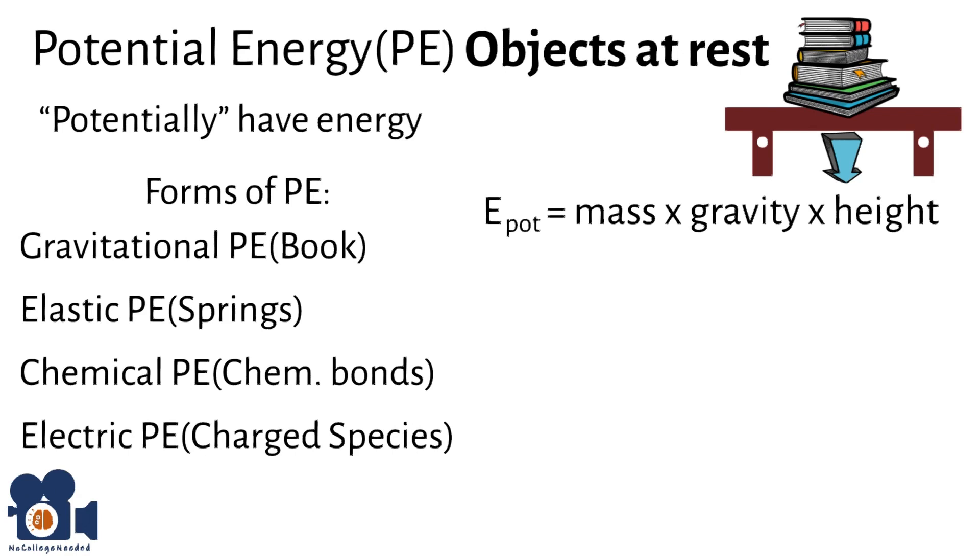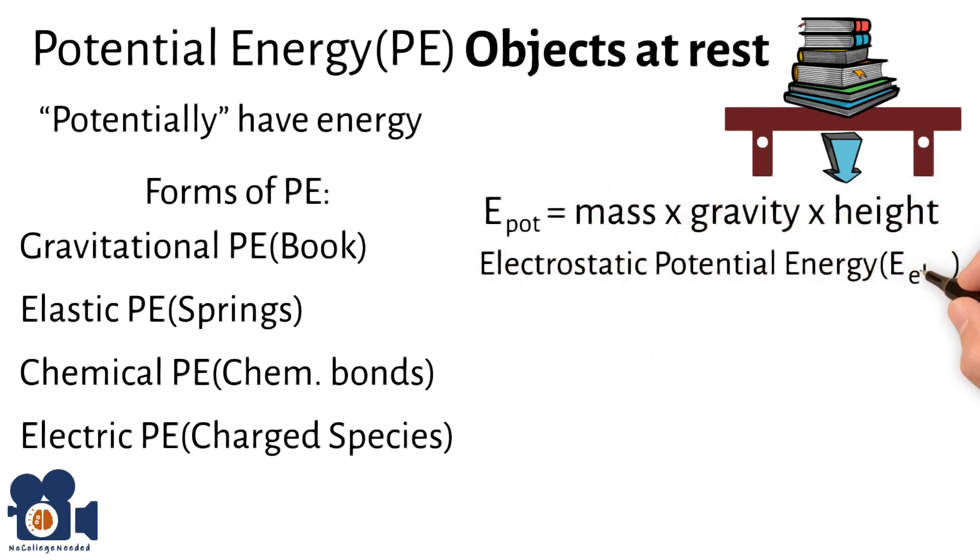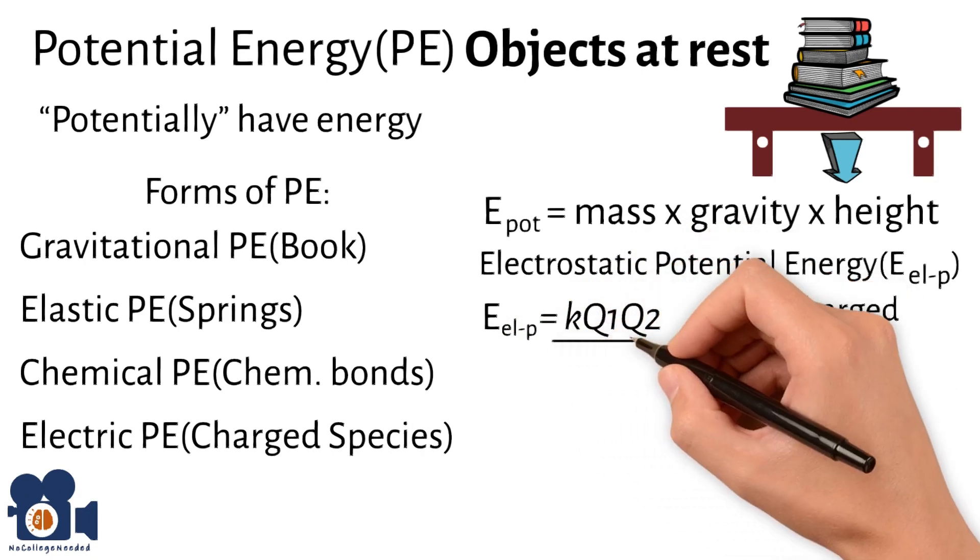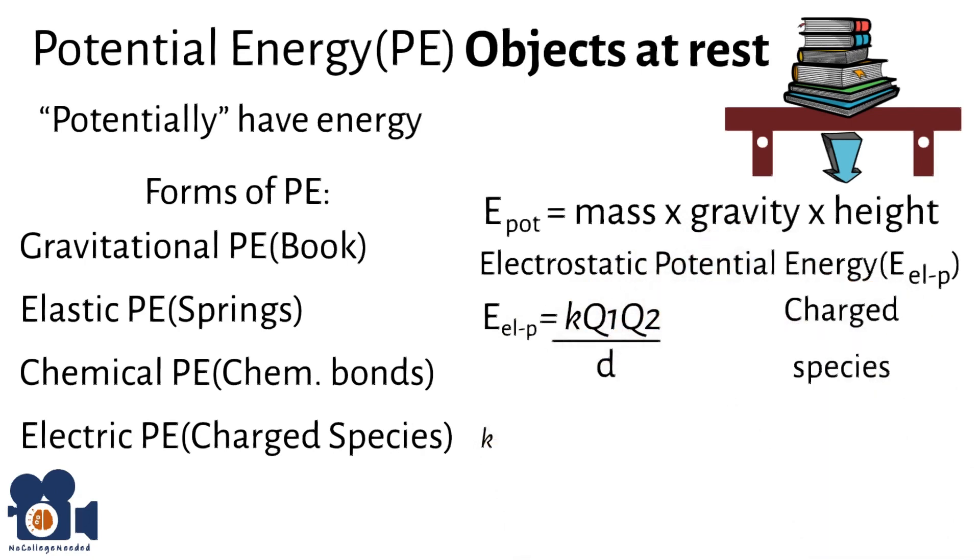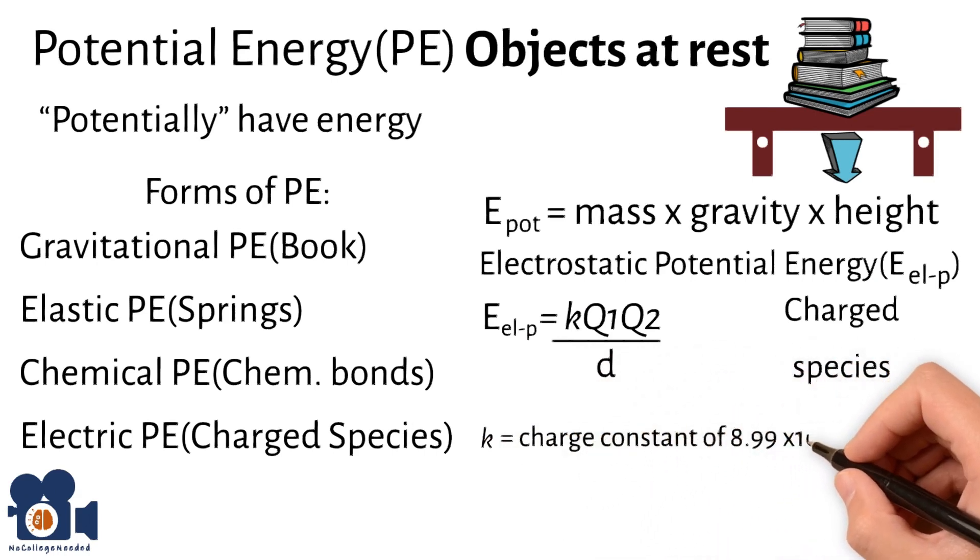The second relates to the electric potential energy, E_ELP, and is critical when dealing with charged atoms, molecules, or ions. And the equation is E_ELP equals K times Q1 times Q2 divided by D, where K is a charge constant of 8.99 times 10 to the ninth joules times meters divided by Coulomb squared.